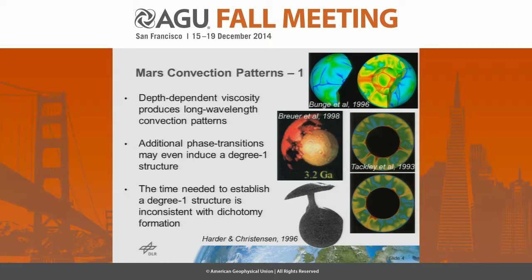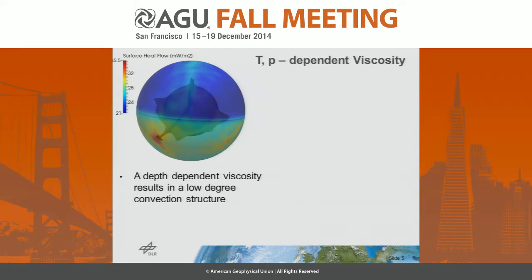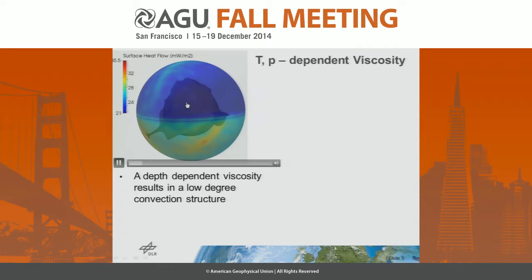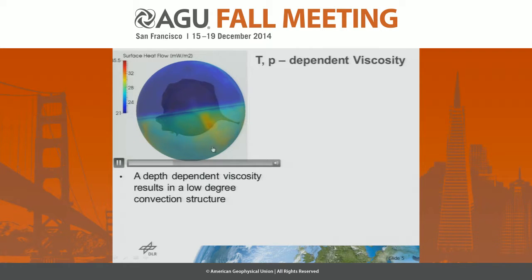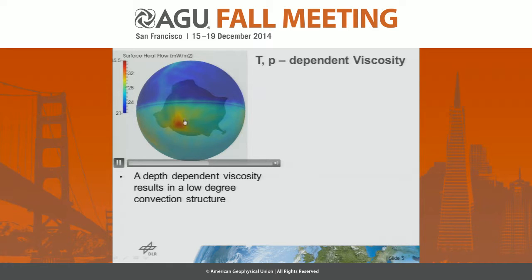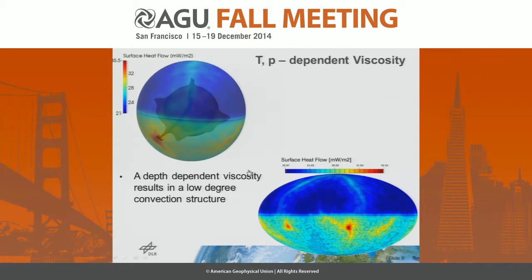We have included temperature and pressure dependence of the viscosity in our models. What we see are the heat flow variations over the surface plotted on top of the convection pattern after 4.5 billion years of evolution. The crustal dichotomy causes a corresponding dichotomy in the heat flow, and we also see increased heat flow over the upwellings — for example, an upwelling with increased heat flow on the southern hemisphere. The heat flow map after 4.5 billion years shows the dichotomy clearly, and also marks the locations of mantle upwellings.